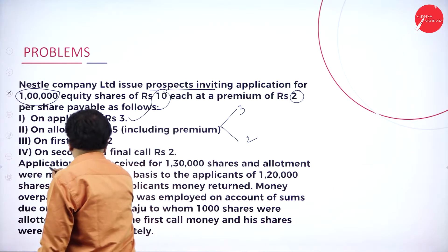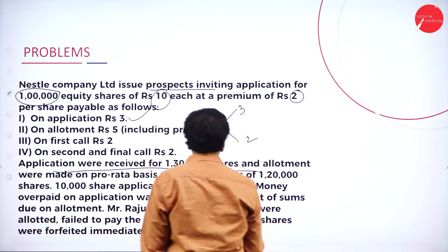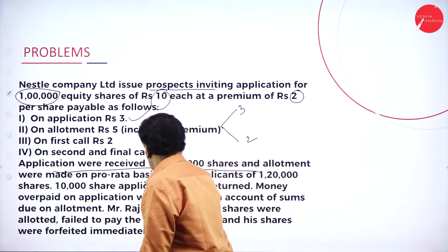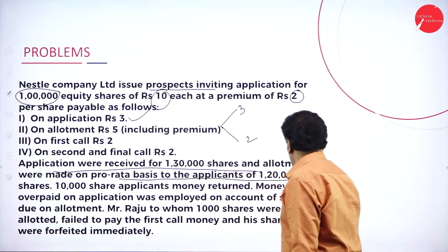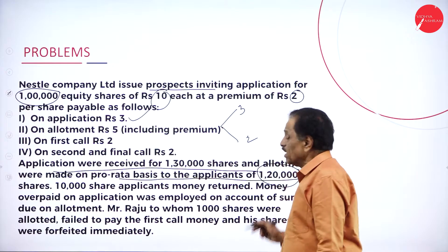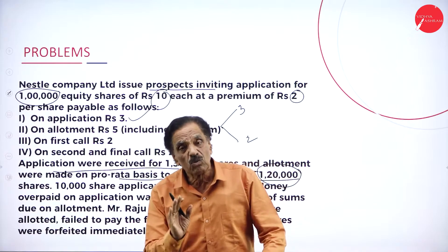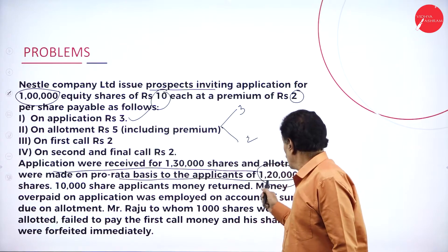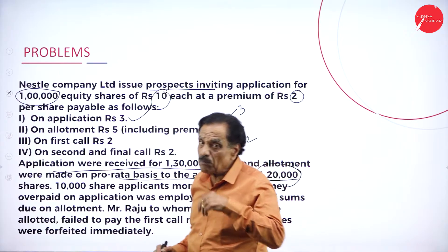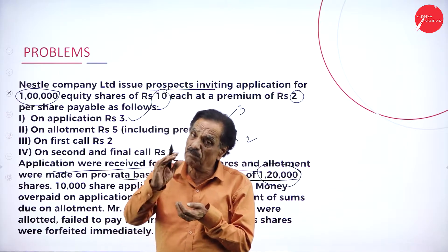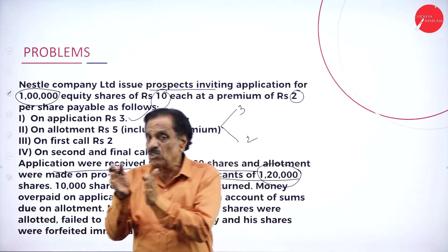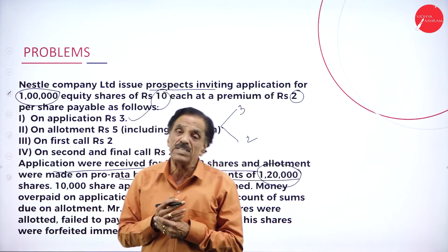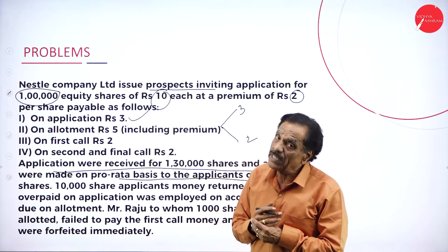The company received 1 lakh 30,000 applications. Allotment was made on pro-rata basis to the applicants of only 1 lakh 20,000. How many applications received? 1,30,000. How many applications accepted? 1,20,000. How much rejected? 10,000 — money has been refunded. For 1 lakh shares, we are accepting 1,20,000 applications — that excess of 20,000 is called pro-rata basis.